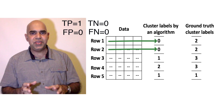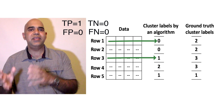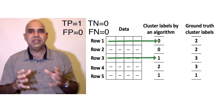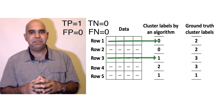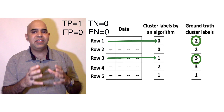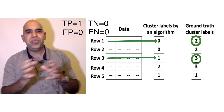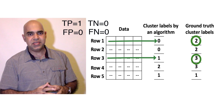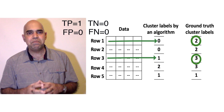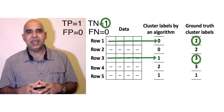The first row and the third row are coming from two different clusters, so this pair is negative. The ground truth also says that the first row and the third row are from two different ground truth clusters. Hence, this pair is a true negative pair. Let us update our count of true negatives.